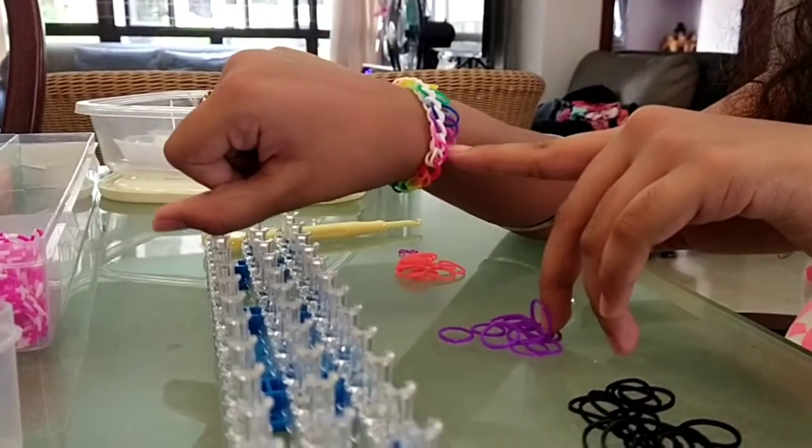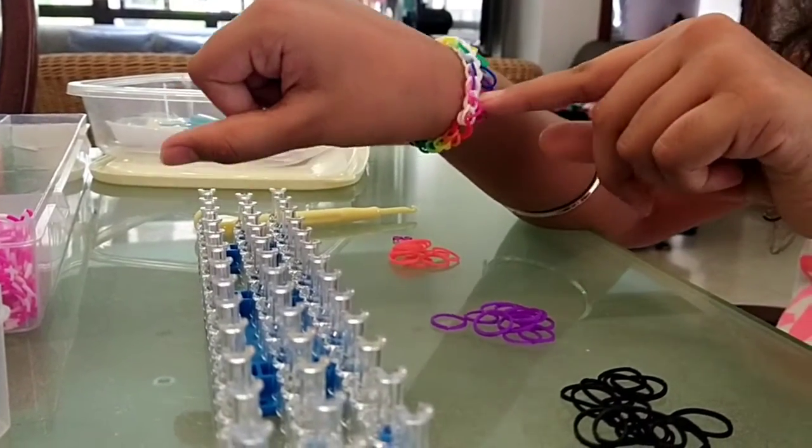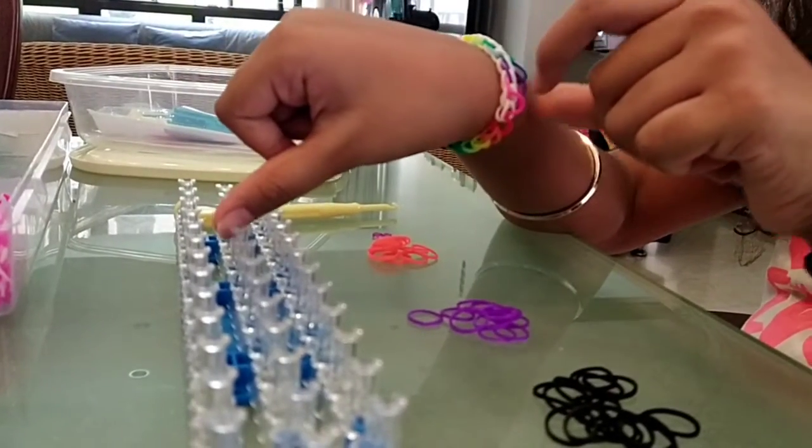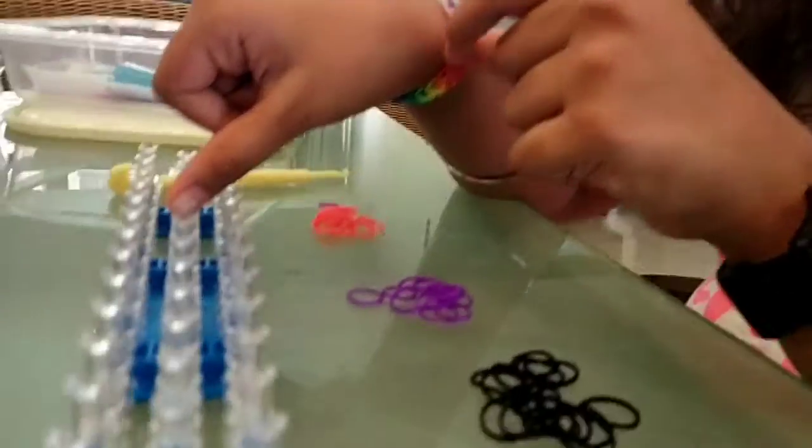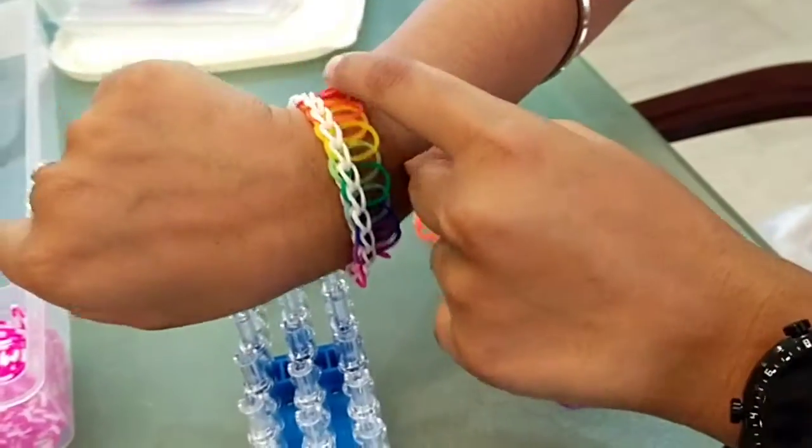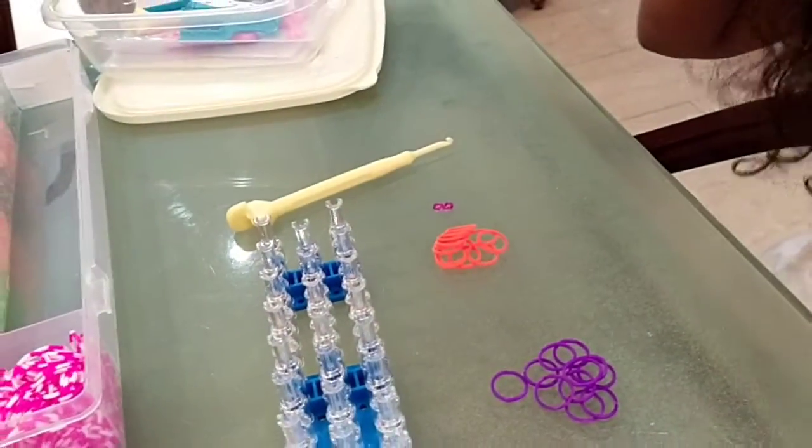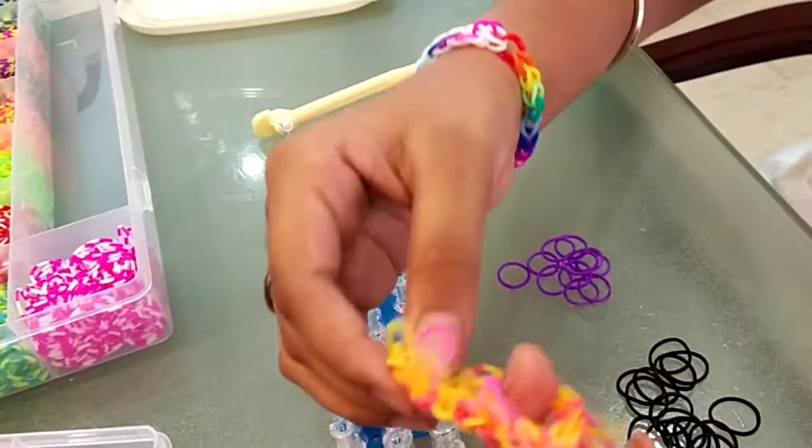This is called the single half wave because it's only a single chain with single rubber bands and half a chain, so there's not another chain here. This is another of my examples.